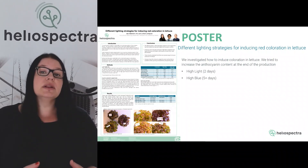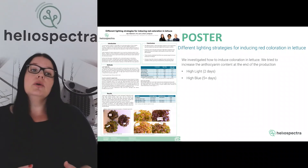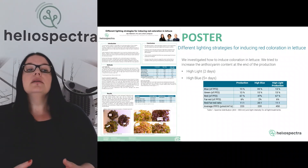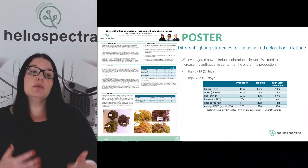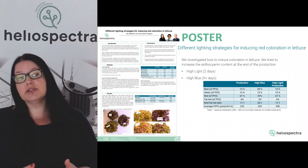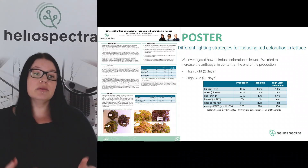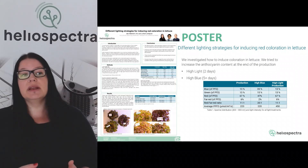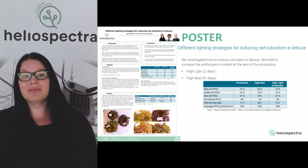We investigated how to induce coloration in lettuce and tried to increase the anthocyanin content in two different ways. We either put the crop under high light for two days at the end of production, or we put it under high blue light for five days. The production spectrum was the light stimulating higher crop production. The high blue treatment increased anthocyanin content through a high proportion of blue within the spectrum, while the high light treatment exposed the crop to nearly double the light intensity it was grown under.